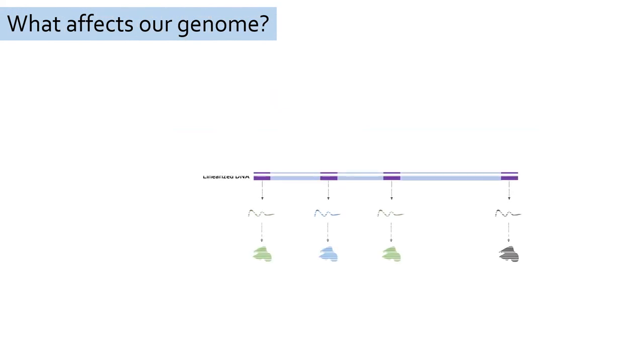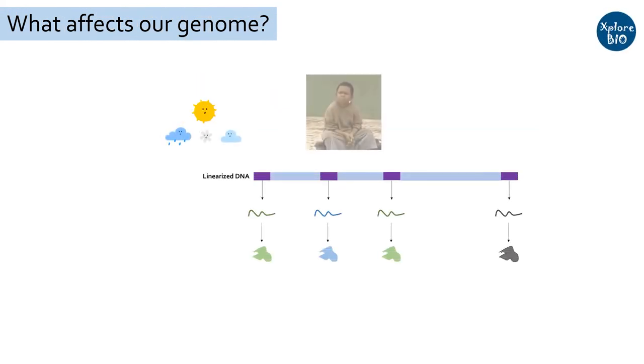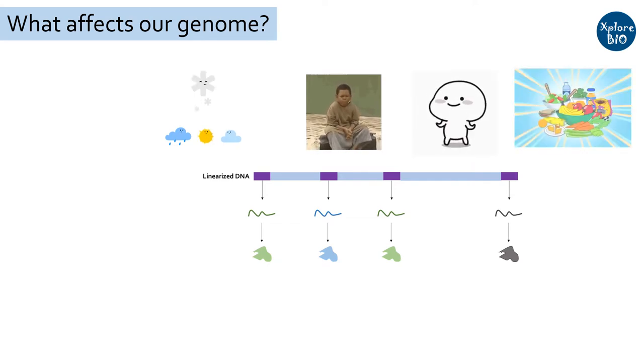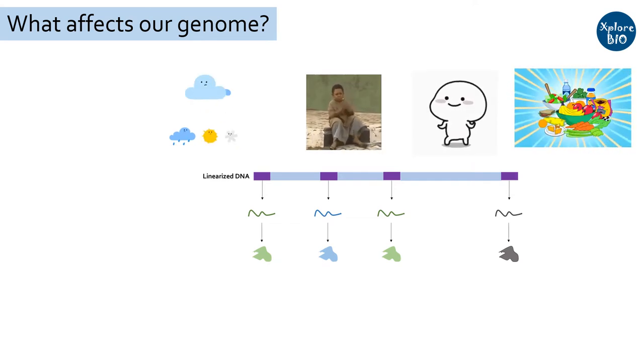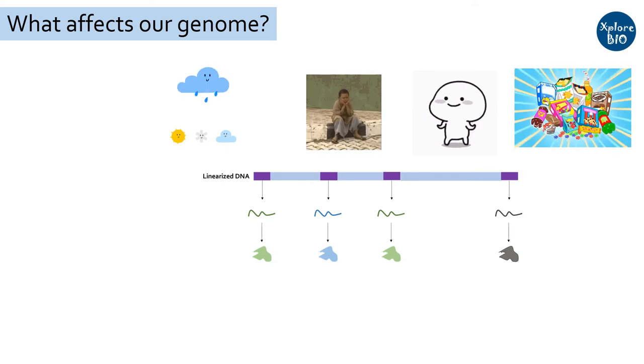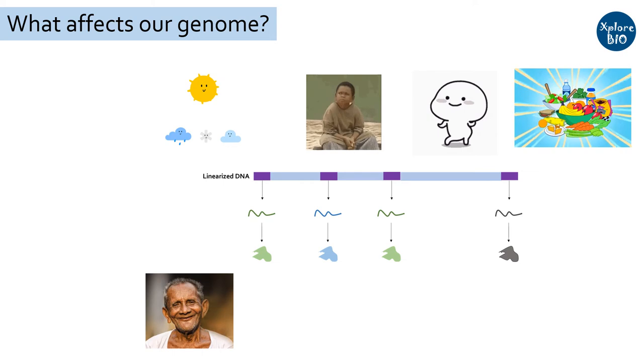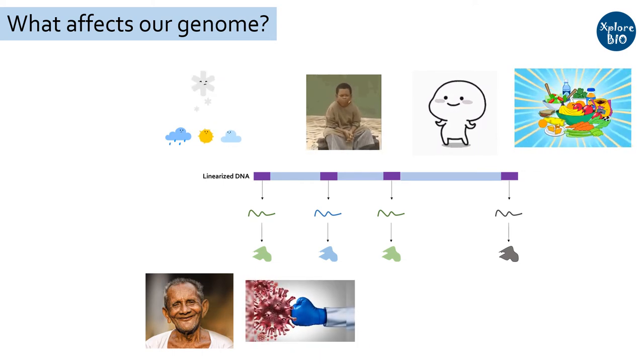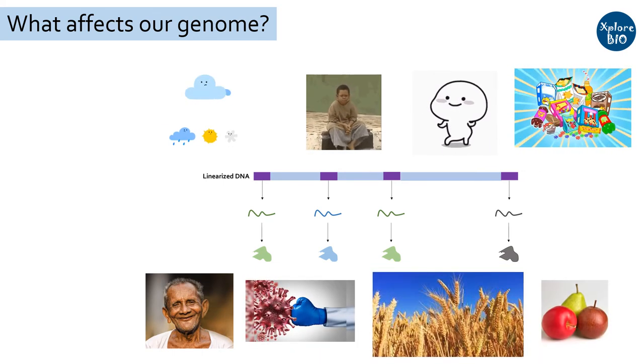The gene expression is altered by many factors: our environment, our thoughts, our feelings, the food we eat, our age, etc. The end product of the gene expression is a phenotype. How an organism looks, its immunity against diseases, yield of a crop, its nutritional characteristics and others.